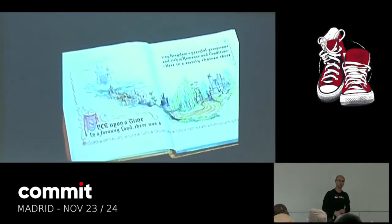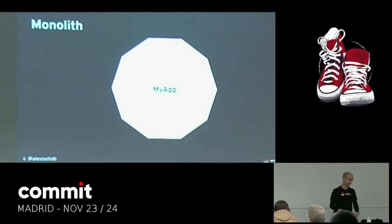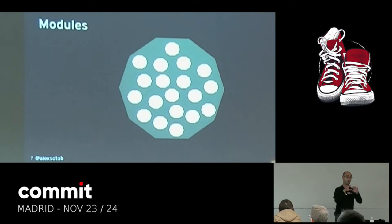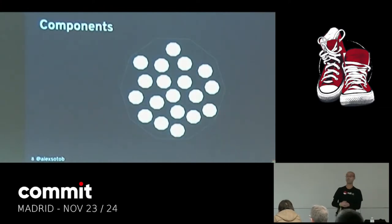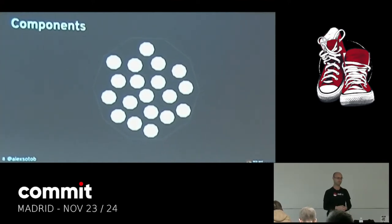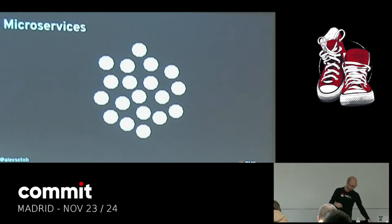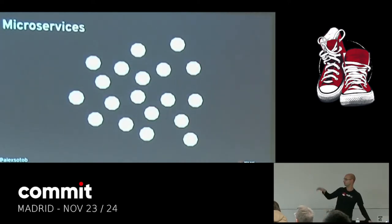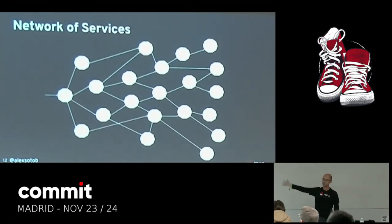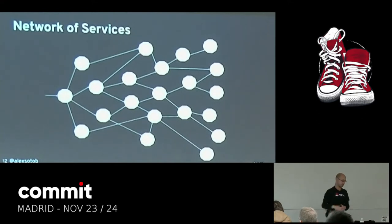Now let's start by thinking about some years ago — maybe three years — when we had monolith applications. Inside the monolith we had modules, and inside each of those modules we had components. Then we decided it would be a good idea to start breaking this monolith into a microservice architecture. We put things on different servers until we have all our microservices connected by the network. What we are creating here is a mesh — it's a graph structure, not a tree, so things become really interesting.